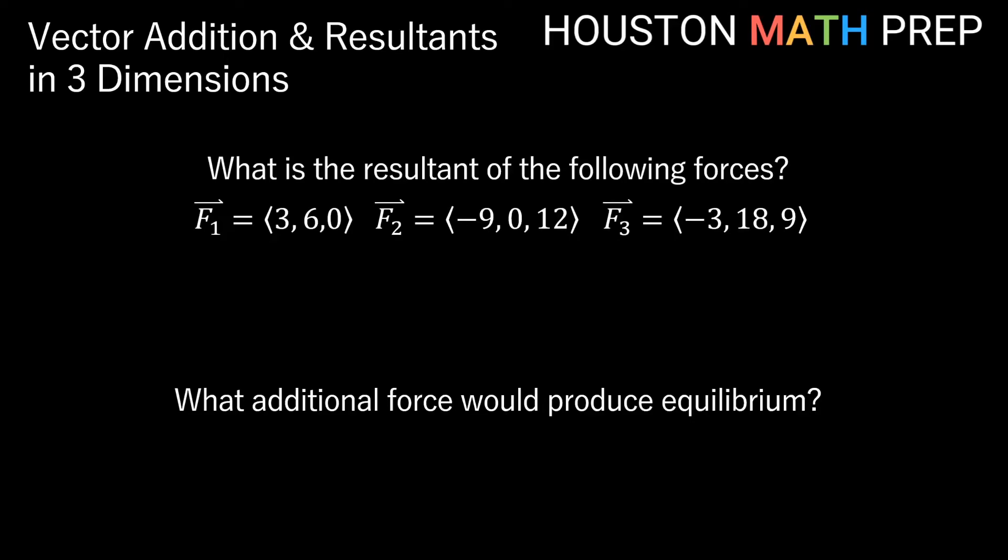Let's do one final problem here, maybe with more than two vectors. So we're being asked, what is the resultant of the following forces? So in other words, we just want to take the sum of all three of these vectors here. So I have a force. Consider this my first force, since it's F sub one. So this is force number one, 3, 6, 0.